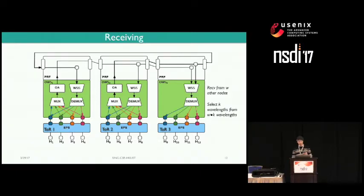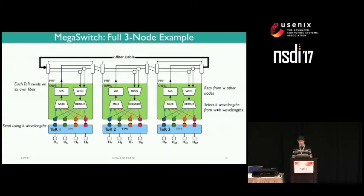At node three, the WSS now receives from both other nodes on the ring and can select four wavelengths from a total of eight wavelengths on the two fibers. The wavelengths are then demultiplexed into the transceivers on the local rack of node three. Completing the three-node example by adding the sending components of node three, each node can send on K wavelengths, and these wavelengths can be received on any node on this multi-fiber ring, enabling widespread all-to-all connectivity simultaneously. We have proven the rearrangeably non-blocking property of Megaswitch in our paper.